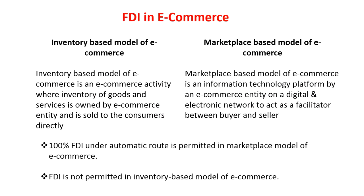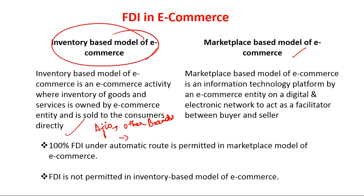In the inventory-based model of e-commerce, the e-commerce entity sells products, services, or digital resources which are produced by that same e-commerce entity directly to consumers. For example, Ajio is involved in selling fashion accessories for both men and women. Apart from acting as a platform for other brands, Ajio also acts as a platform for its own products. This practice of selling one's own products is known as the inventory-based model of e-commerce.